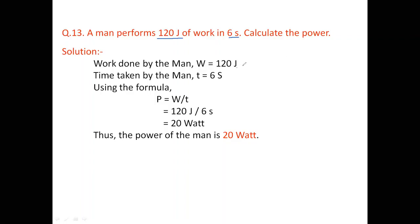Work done by the man, W is equal to 120 joule. Time taken by the man is 6 seconds. Now using the formula of power which is defined as rate of work done, power is equal to work done by time taken. That is 120 joule divided by 6 seconds. So the power of the man is 20 watt.